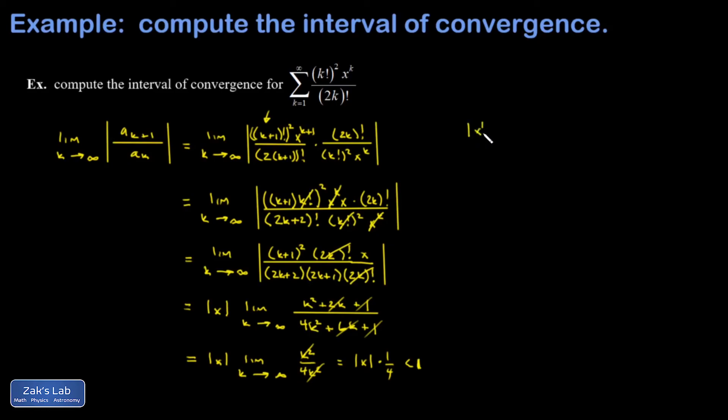So multiply both sides by 4 and you get absolute value of x is less than 4, which means x must be between negative 2 and 2. So our interval of convergence is negative 2 to 2. I could also say the radius of convergence - that's just half the width of the interval, that's 2.